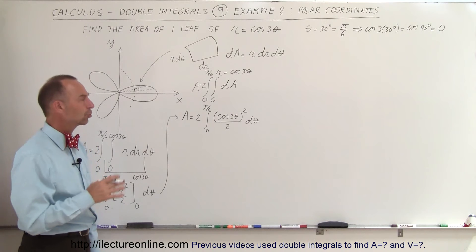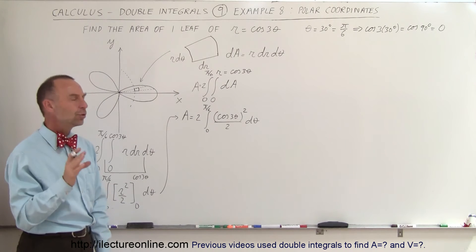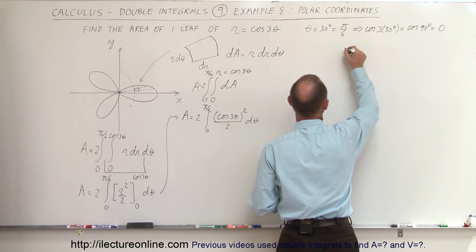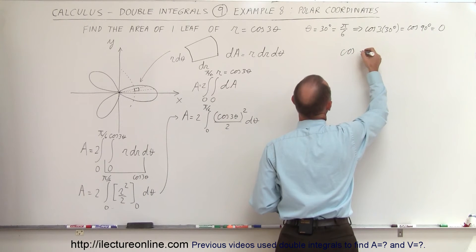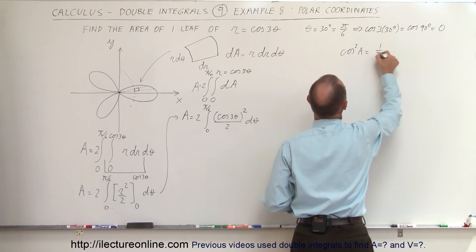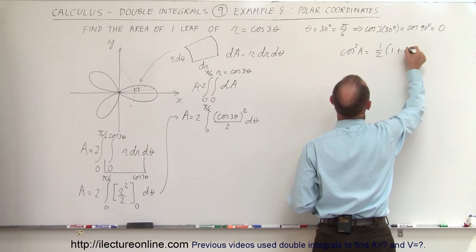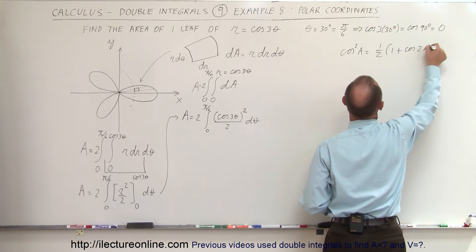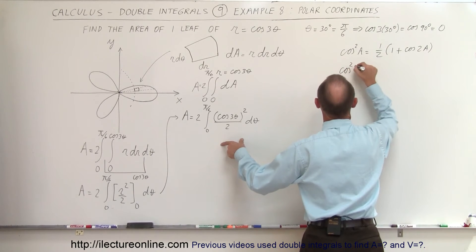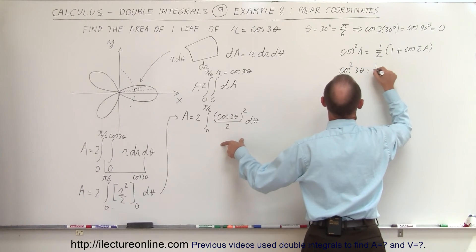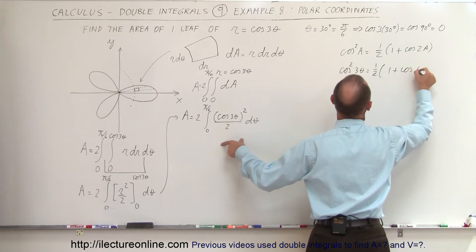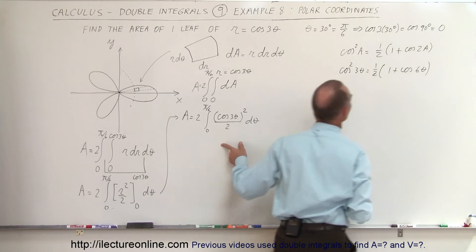We have a problem: how do we integrate cosine squared of 3 theta? We need a trig identity. The identity is: cosine squared of a equals one half times the quantity 1 plus cosine of 2a. Using this, cosine squared of 3 theta equals one half times the quantity 1 plus cosine of 6 theta — simply doubling the angle.